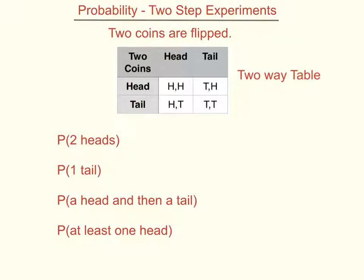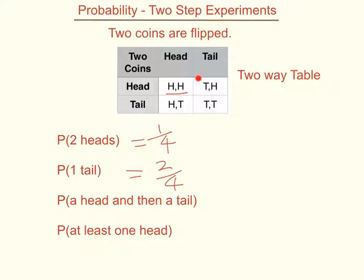The probability of getting two heads is one out of four, because there is one way of getting two heads and there are four possible outcomes. The probability of getting one tail is actually two out of four, because I can get one tail here and one tail here, and that ends up being a half.